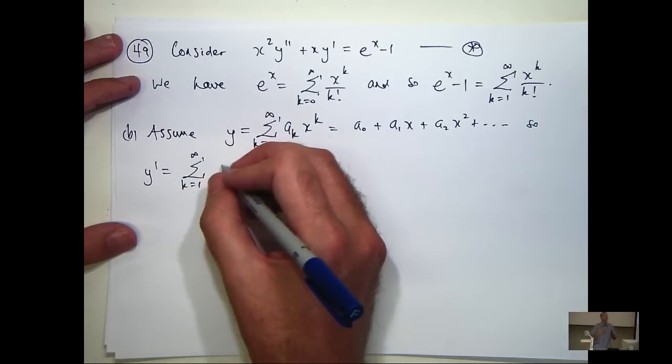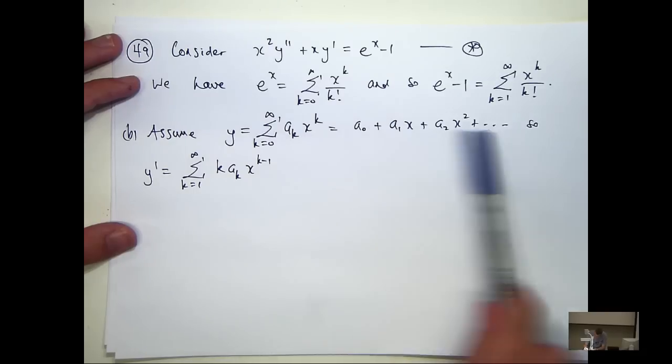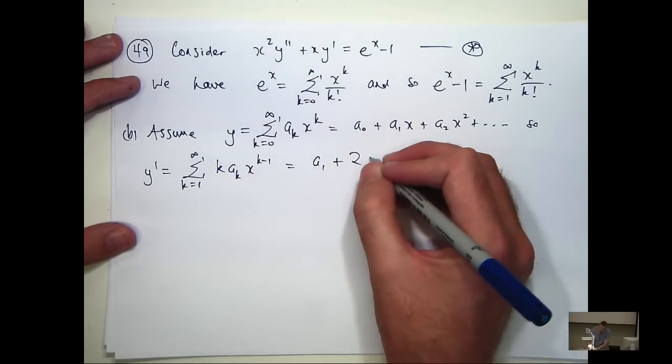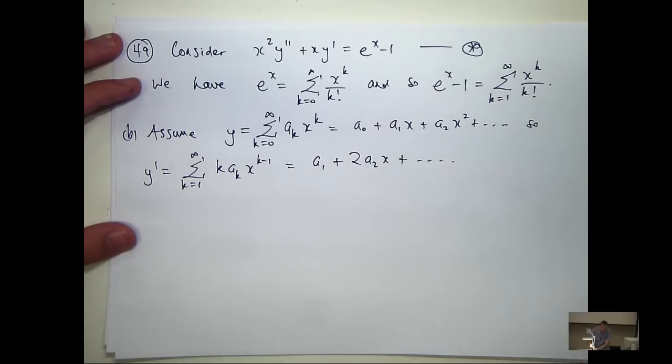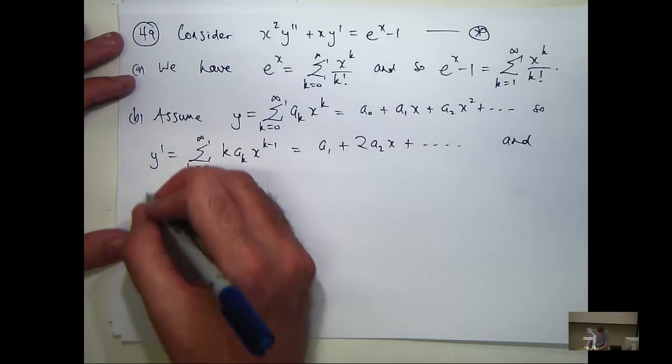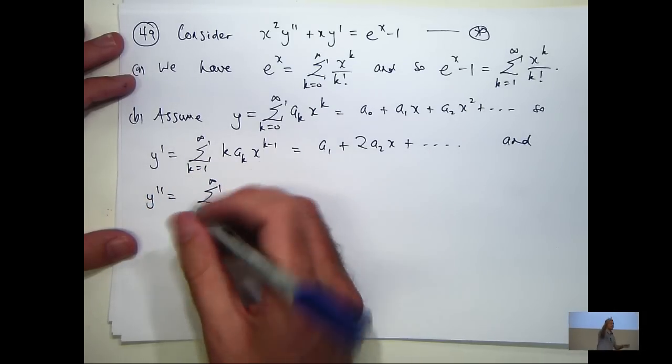So if I differentiate, I'll get something like this. You can write out these if you want to. You're going to get A1 plus 2A2x plus, and so on.